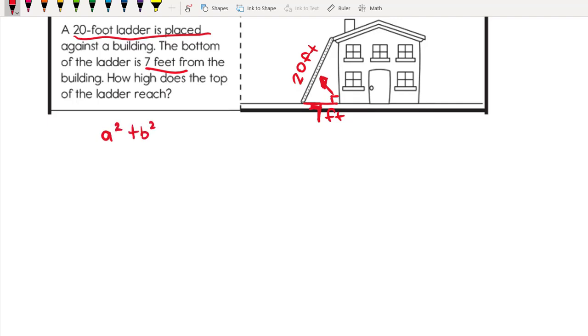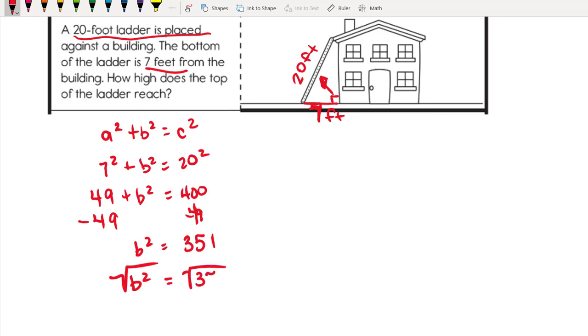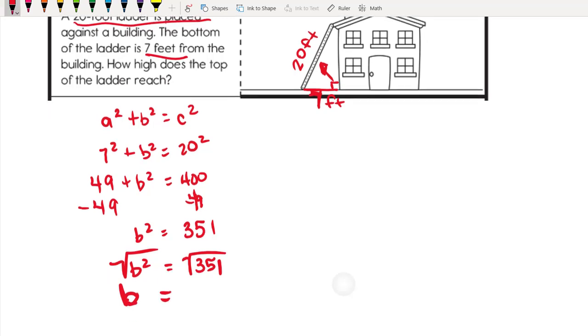We're going to do the same process: plug it into the Pythagorean theorem a squared plus b squared equals c squared. We get 7 squared plus b squared equals 20 squared. Seven squared is 49 and 20 squared is 400. We're going to subtract 49 from both sides, leaving b squared equals 351. Last step is to square root both sides to keep it balanced.